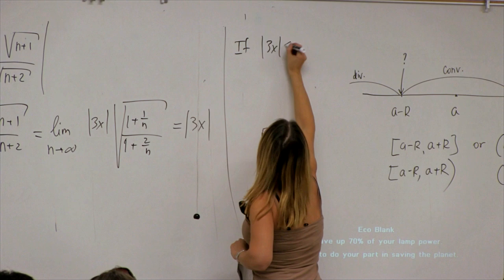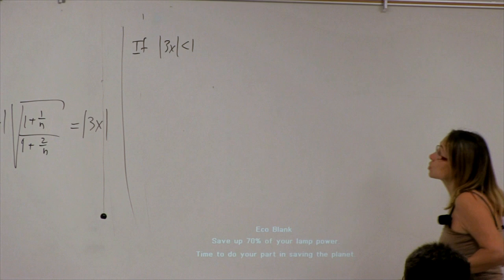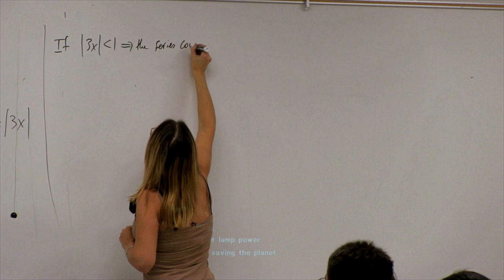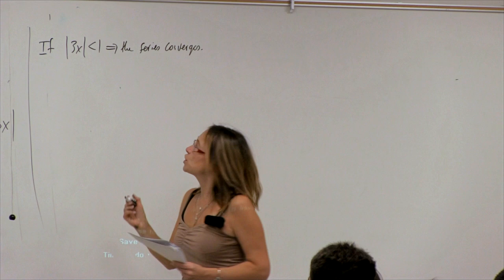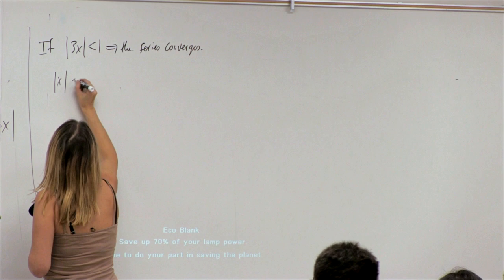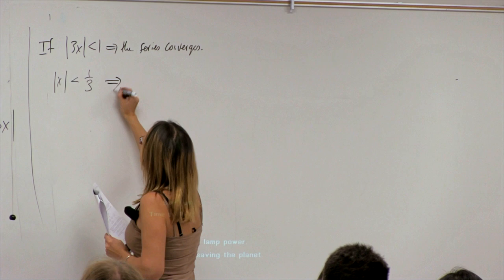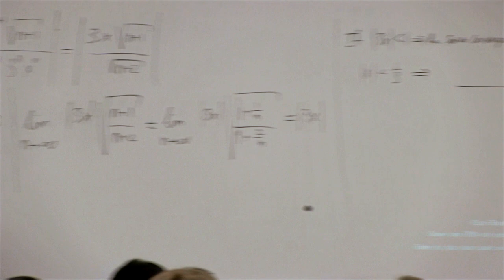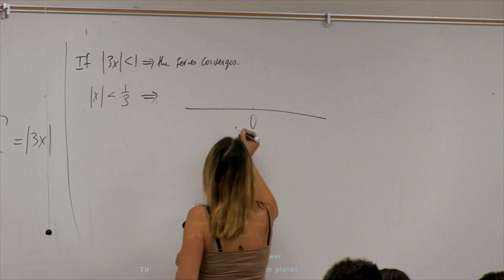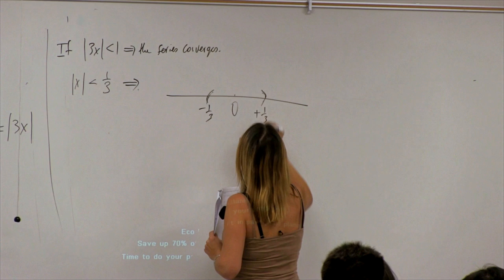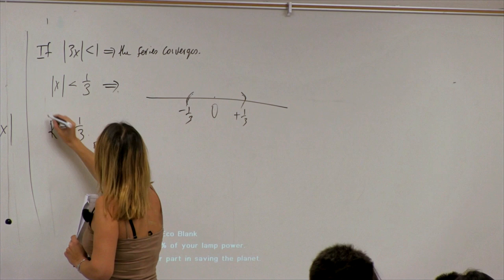To extract the radius, I divide by 3: |x| < 1/3. The center is at 0, so convergence is in the interval between −1/3 and +1/3. This means r, the radius of convergence, is 1/3. I've answered the first question. Now I don't yet know what happens at the endpoints.